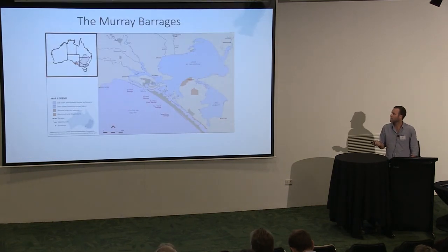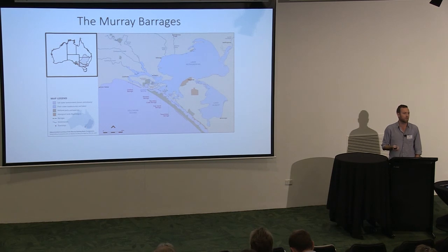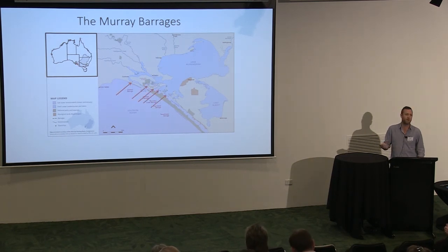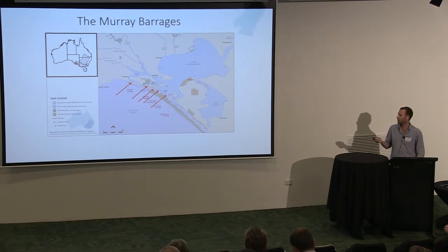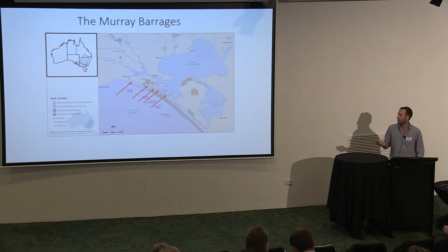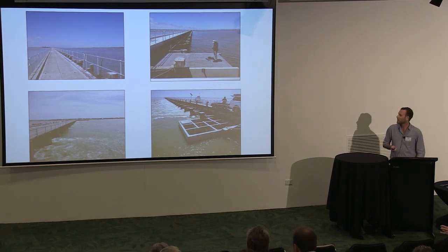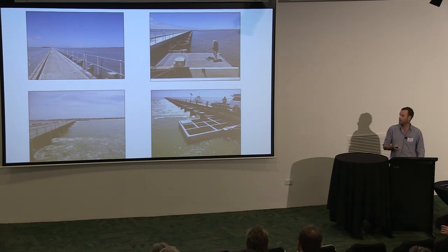To put some spatial and hydrological context into this talk, we're right down the bottom of the basin in the Lower Lakes and Coorong. What's unique about this area is that a series of tidal barrages were constructed many years ago that now separate the Lower Lakes and Lower River from the Coorong Estuary and the Southern Ocean. The barrages are quite low — only about one to two metres high — but they're extensive, over seven kilometres in length, and represent the primary barrier to diadromous fishes moving in and out of the basin.